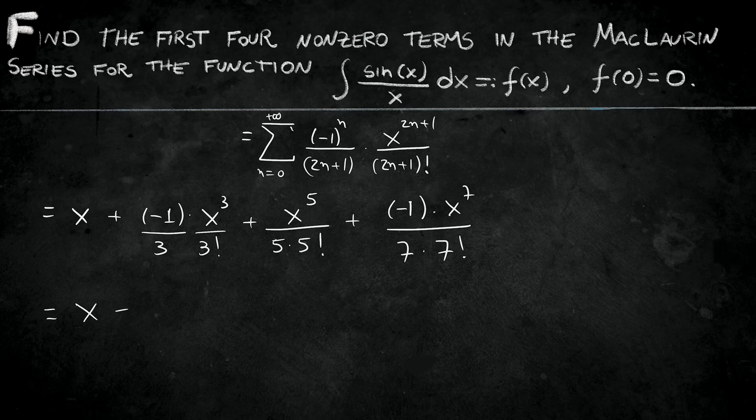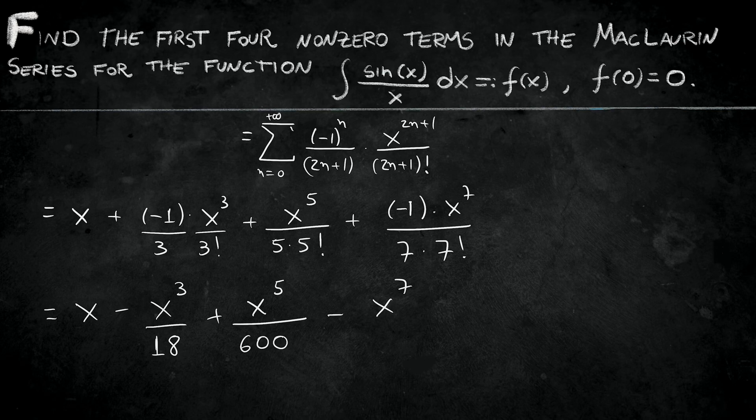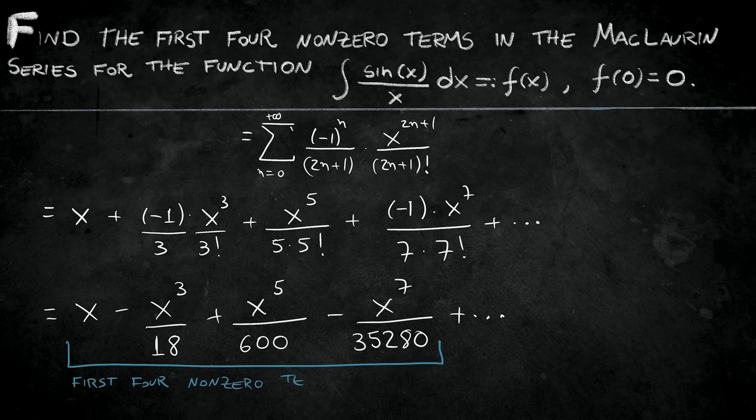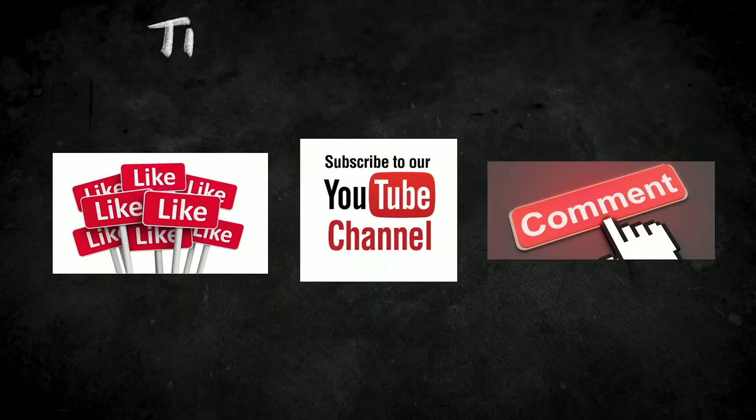four non-zero terms are x minus x cubed over 18 plus x to the fifth over 600 minus x to the power 7 over 35,280. And then we can proceed and find the other terms. But here the question was find the first four non-zero terms and we got it. I hope you guys enjoyed the video.